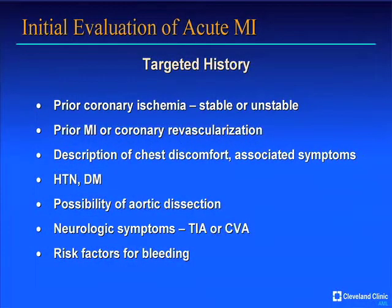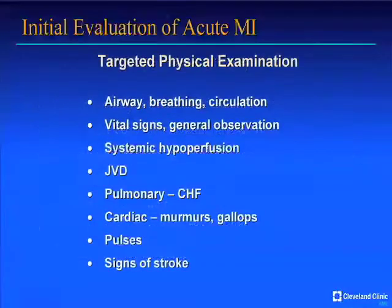The targeted history elements include whether patients have known coronary disease with symptoms or revascularization procedures, a description of the chest discomfort, important risk factors, and issues related to aortic dissection, stroke, and risk factors for bleeding. Similarly, the physical examination covers the ABCs — whether a patient is in impending or overt shock or heart failure — and whether there are signs of stroke or loss of pulse consistent with aortic dissection.